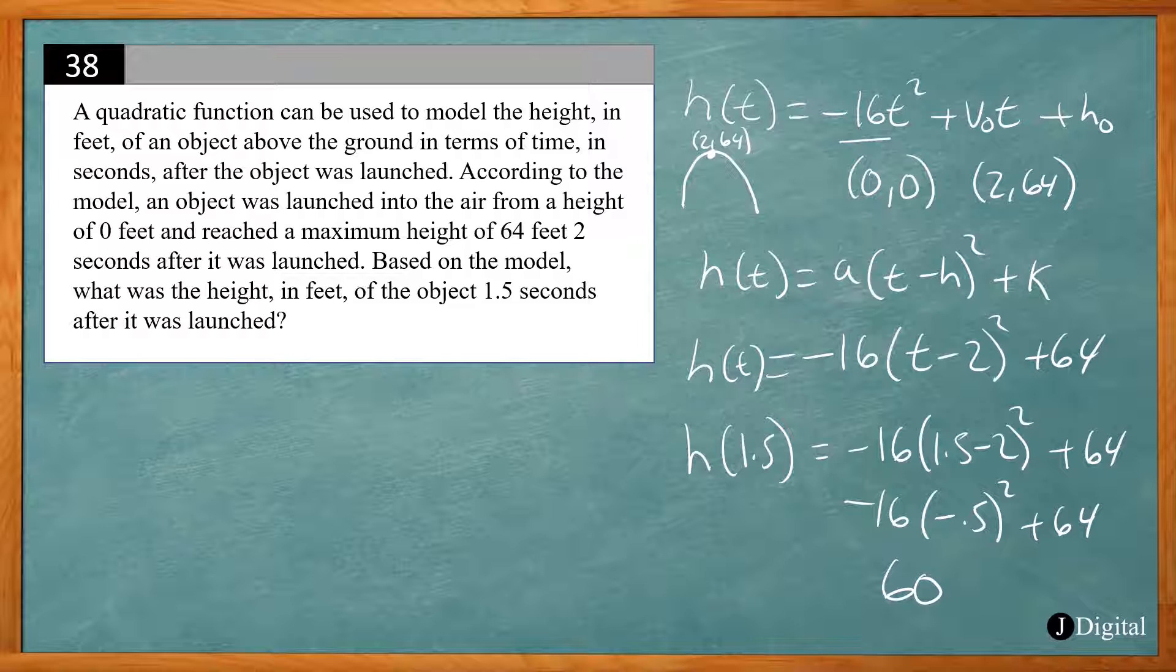Now if you didn't know the projectile motion equation with the negative 16t² plus v₀t plus h₀, you can figure out the a using the vertex form of parabola. So let's check that out.